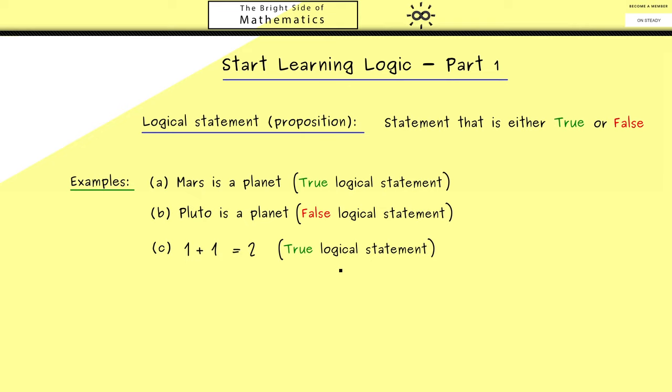Of course such logical statements coming from mathematics can also be formulated with English words. For example, we could say the number 5 is smaller than the number 2. So here we need only knowledge of the natural numbers and how they are ordered. Then you can say yes, this is also a logical statement but it is false.